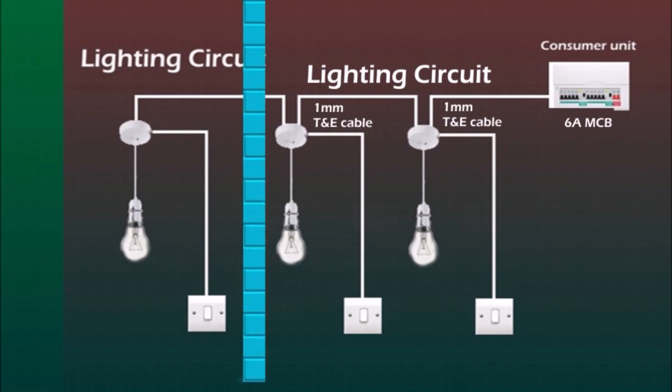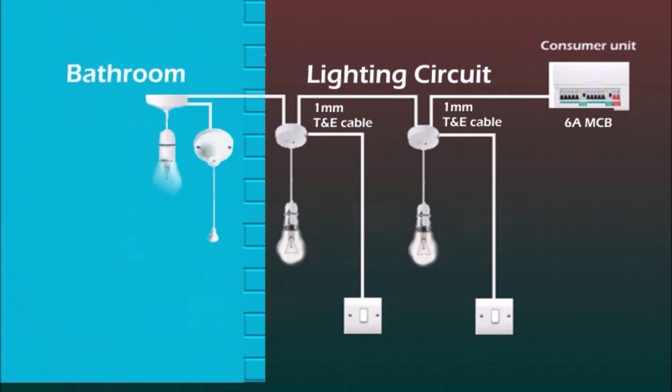Let's say that the last room is our bathroom where we have a ceiling rose with lamp pendant and pull cord switch and a shaver socket on the wall. So if we want to connect our shaver socket to the lighting circuit we need to run one millimeter cable from the shaver to the ceiling rose where we have line and neutral wires.